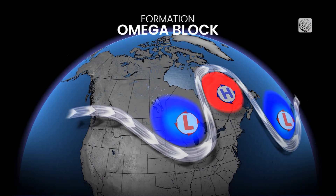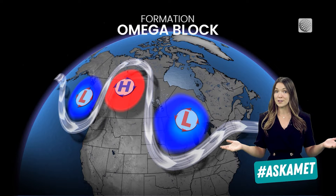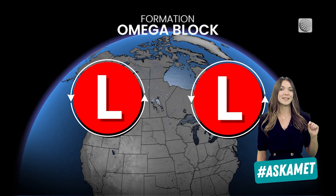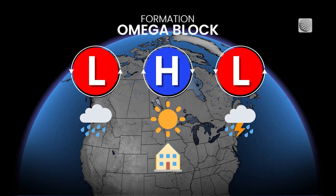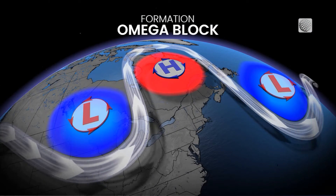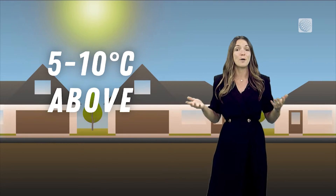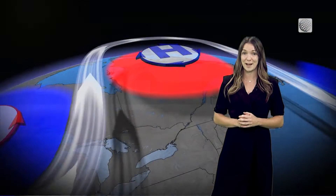This can occur anywhere in Canada or across the globe, where two lows sandwich one high. The result is very different weather depending on where you are. If your region is underneath the high, you can count on plenty of sunshine as air sinks beneath it. And it often means a warm-up too — temperatures could read 5 to 10 degrees above normal, depending on its strength.